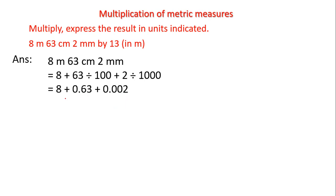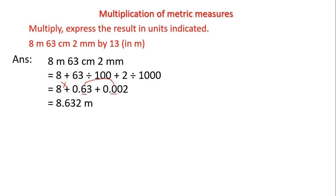The lowest place is thousandths. In the thousandths place we have 2; the other numbers have nothing there, so I write 2 as it is. Next, in the hundredths place: 0 and 3 — that gives 3. In the tenths place: 0 and 6 — that gives 6. Then we place the decimal point.